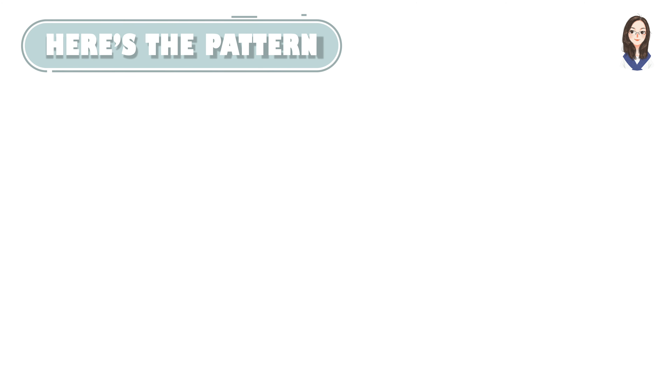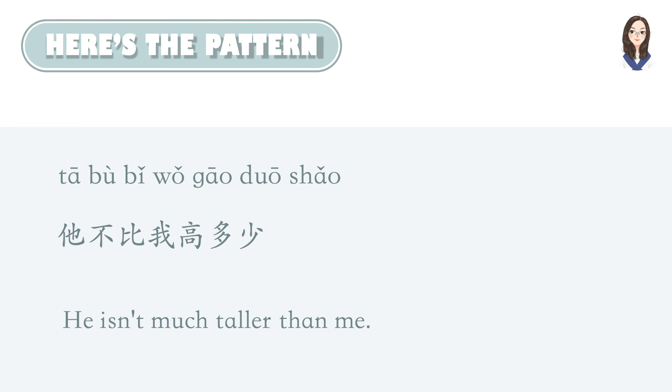So in this situation, Bob can say: 他不比我高多少。 他不比我高多少。